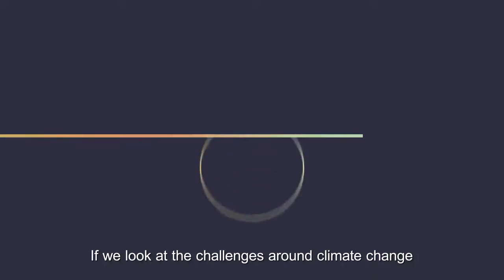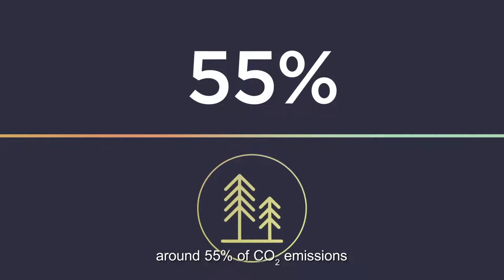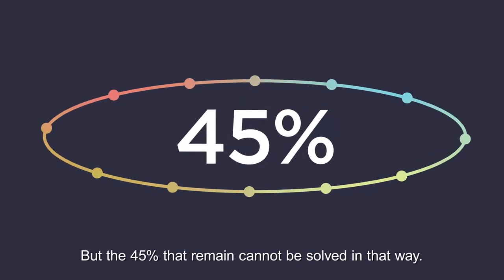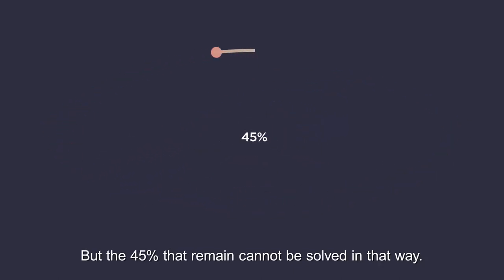If we look at the challenges around climate change, around 55% of CO2 emissions can be solved by switching completely to renewables. But the 45% that remain cannot be solved in that way.